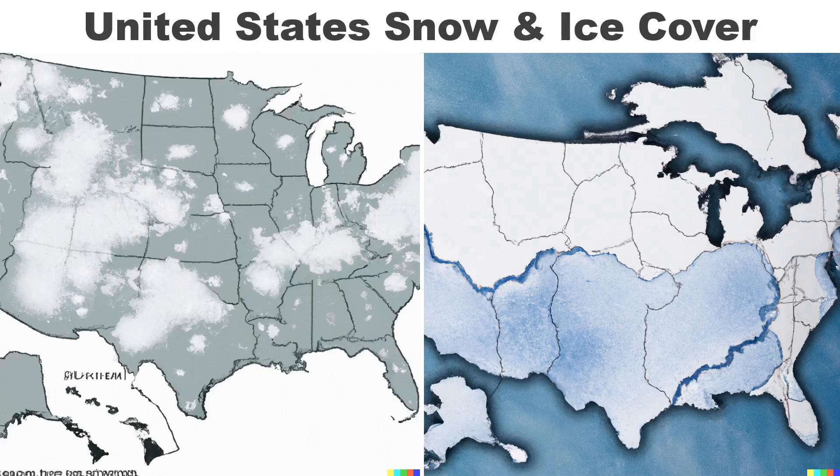Now we have United States snow and ice cover. On the left, it looks like every state has some snow cover, most commonly in the middle of each state. On the right, I assume blue is ice cover — it's interesting that the south and the southwest is where all the ice is. Above the Great Lakes, I like the inclusion of a highly warped version of the continent.